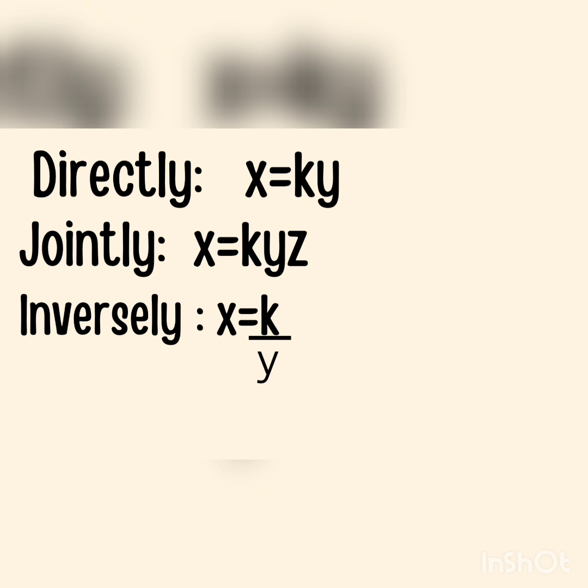When it says directly, it means x equals ky. You'll multiply k to y. When it says jointly, it's the same as directly, but have more variables.